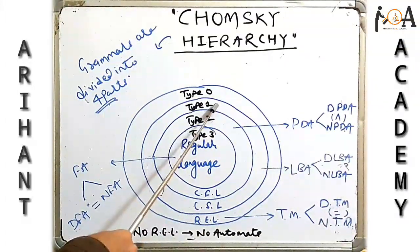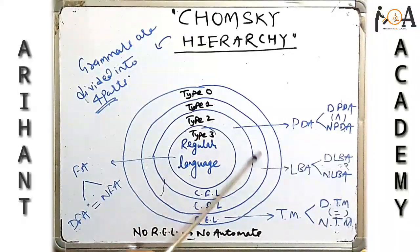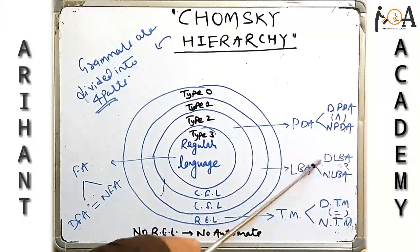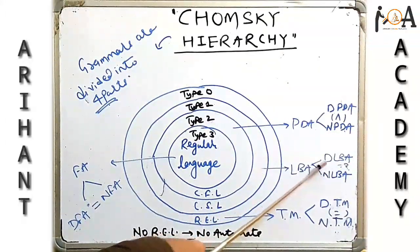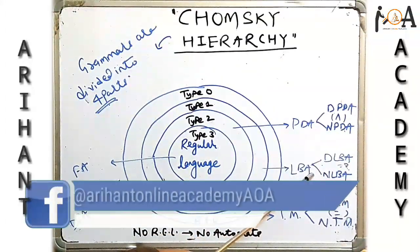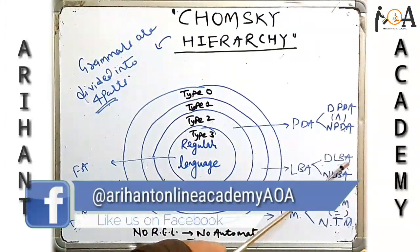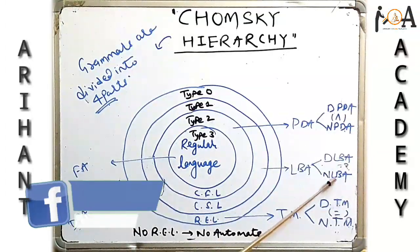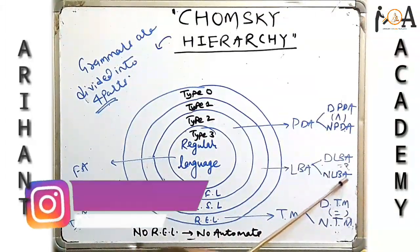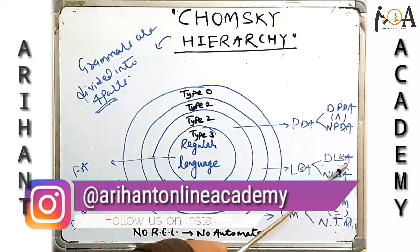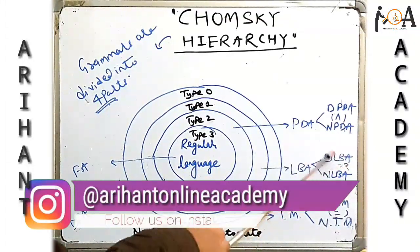Type 1 grammar is also called a context sensitive language. It is recognized by LBA, that is Linear Bounded Automata. This is also of two types: deterministic and non-deterministic linear bounded automata. If we consider their power, we cannot say exactly whose power is greater.